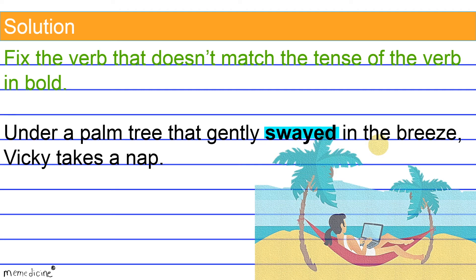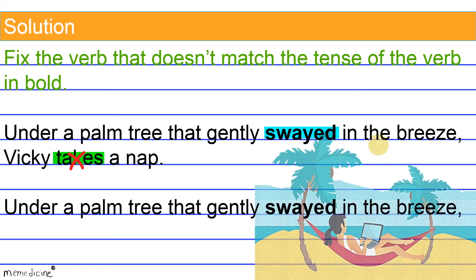However, the second verb 'takes' is written in the singular third person present tense verb form. There is no need to reflect a time change. All the verbs should be in the same tense. Shifting the tense of the second verb to its present tense form is incorrect because this creates inconsistency in the overall tense of the sentence. Change 'takes' to its simple singular third person past tense form to restore consistency.